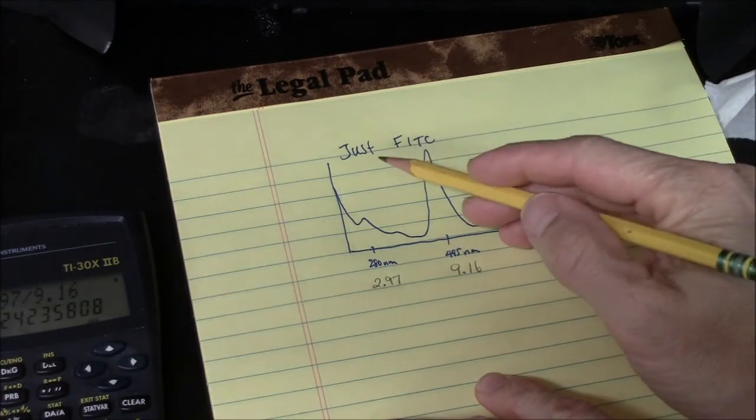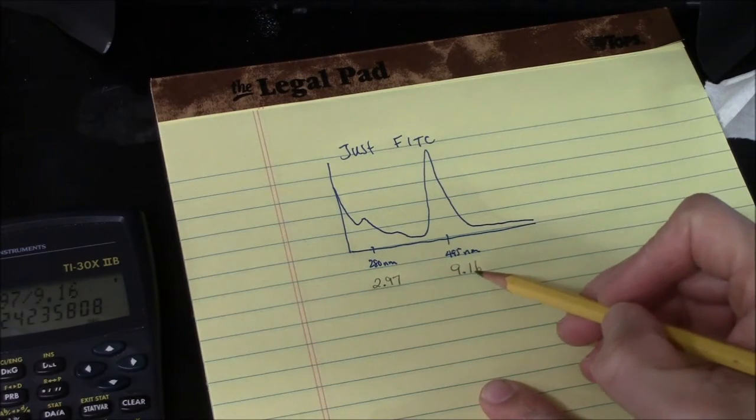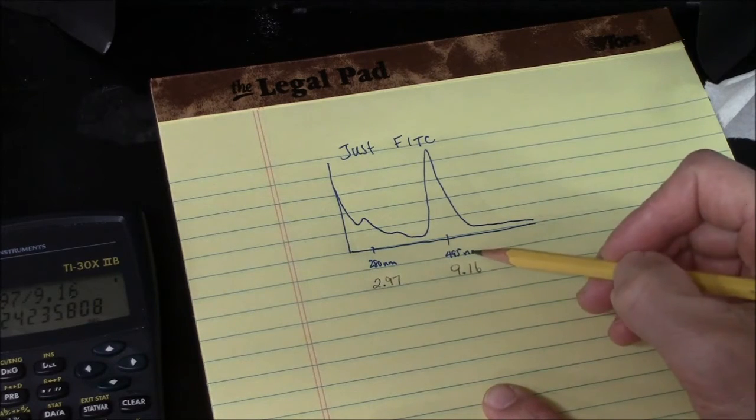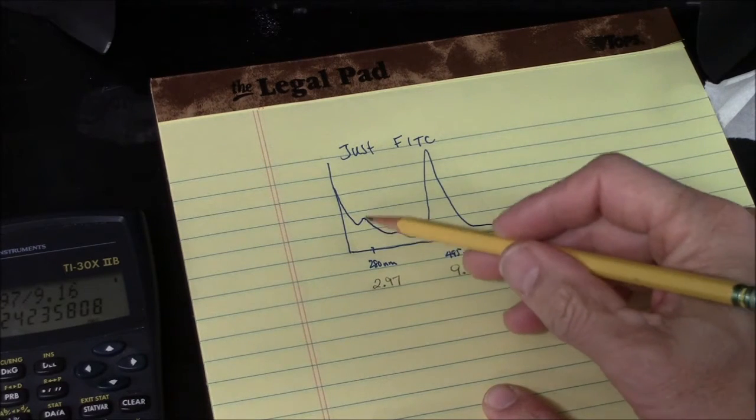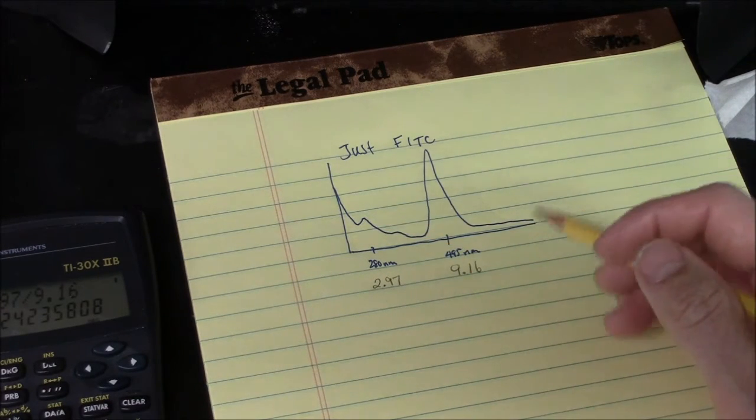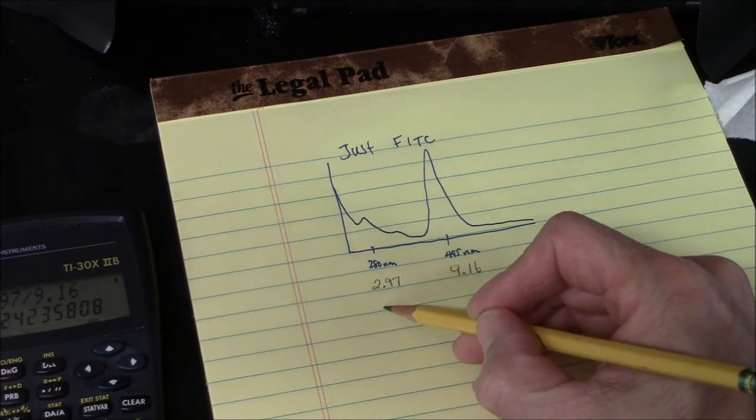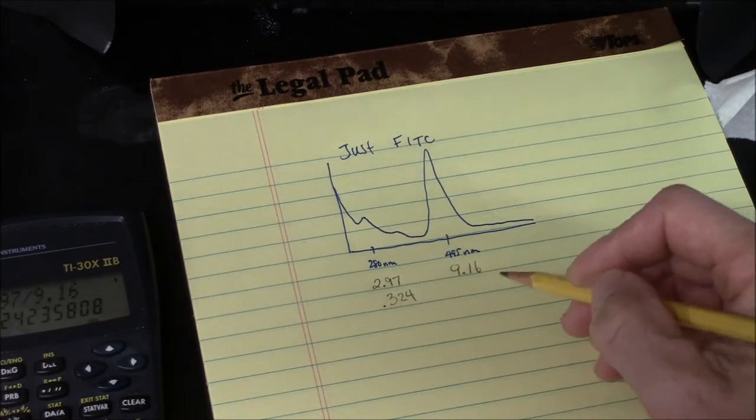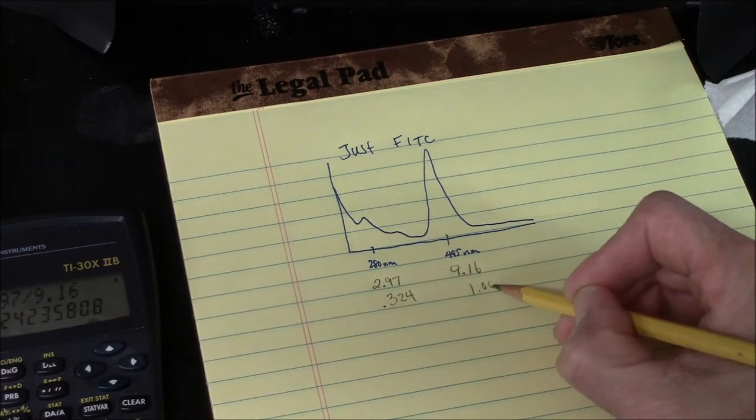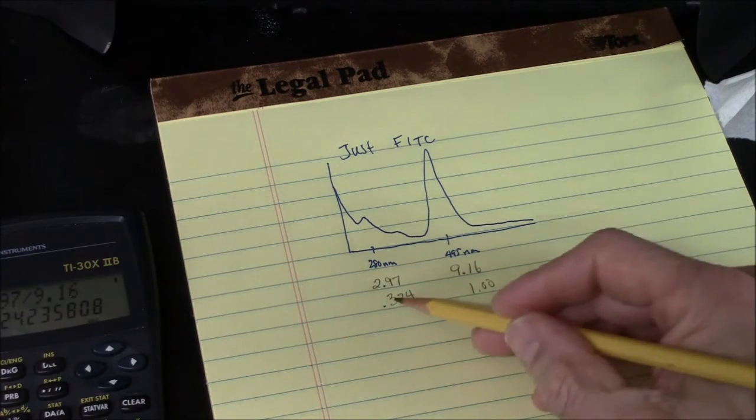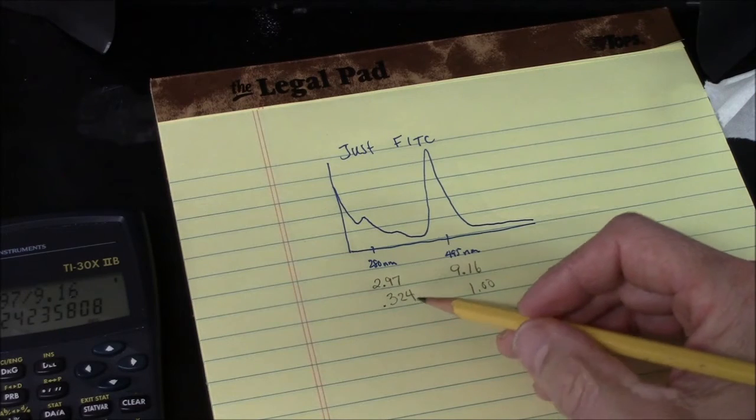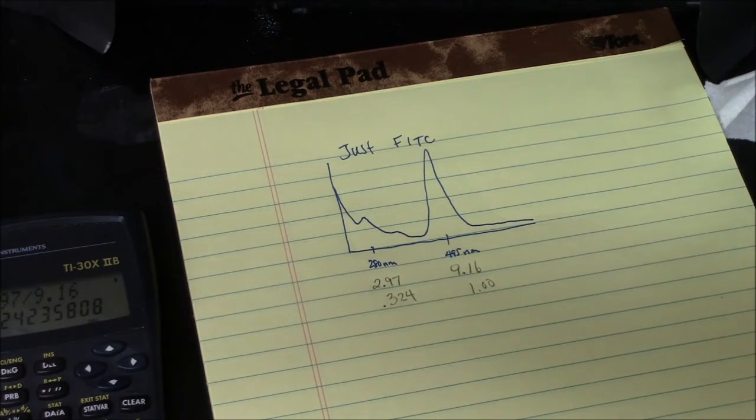When we took the spectrum of just FITC, we saw that the peak at 495 nanometers is significantly taller than this small peak at 280 nanometers. And the ratio we found was 0.324 to 1. So I'll use this ratio now to correct the spectrum of the protein plus FITC.